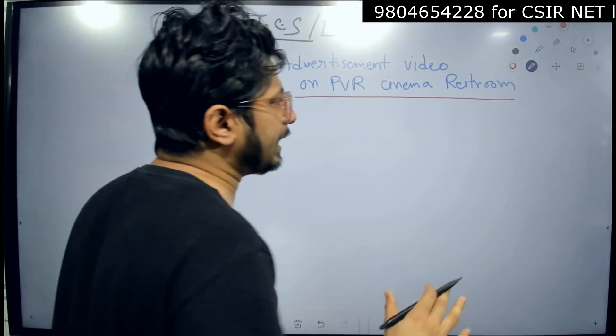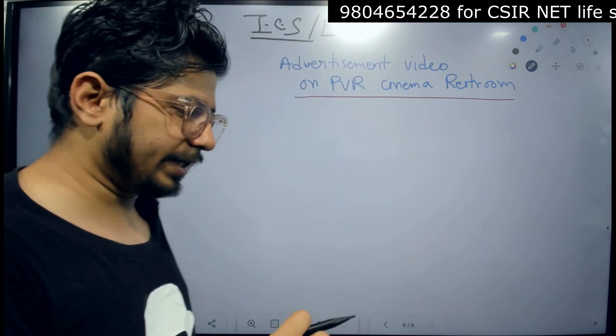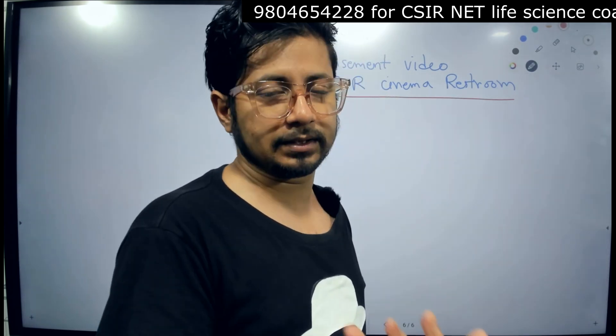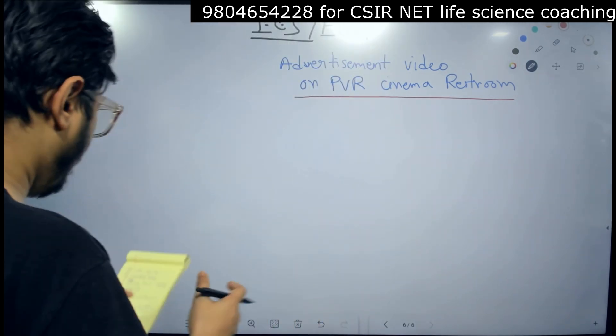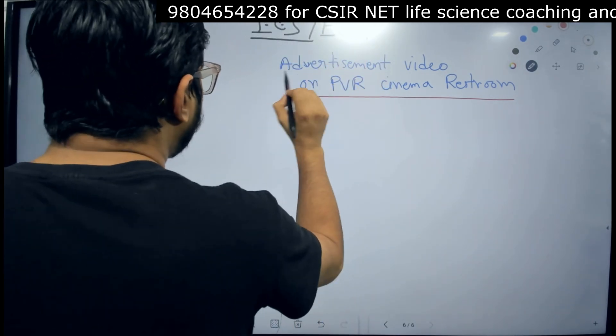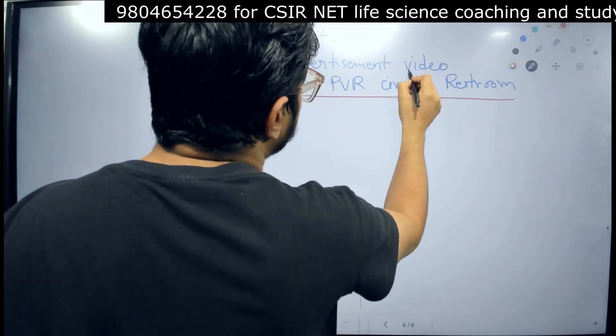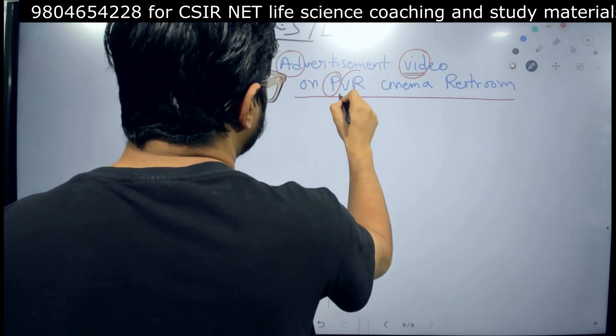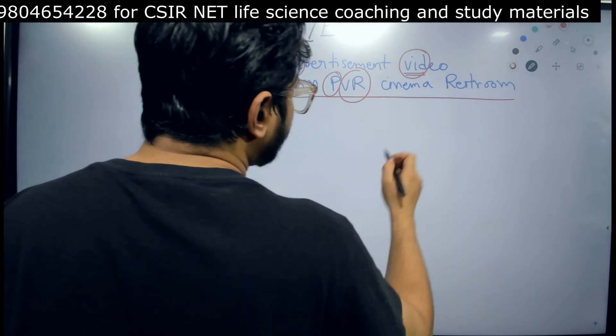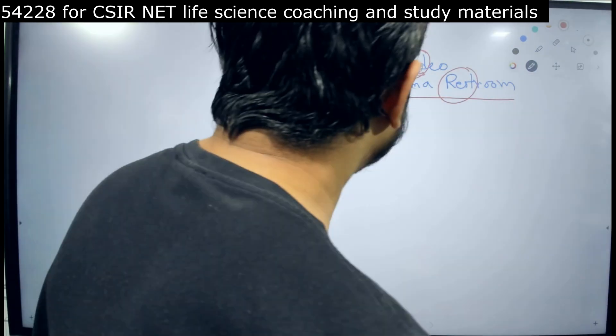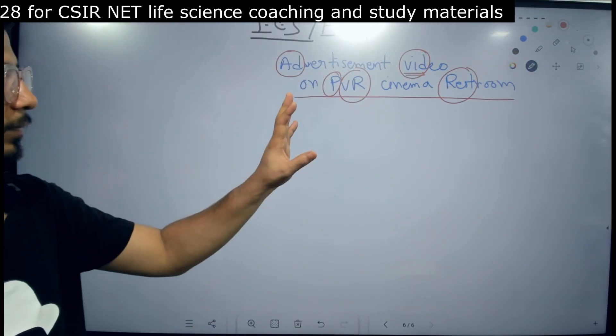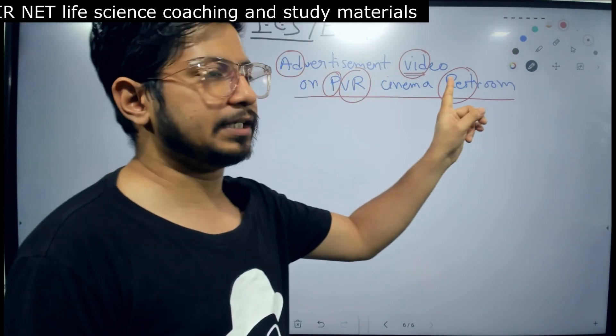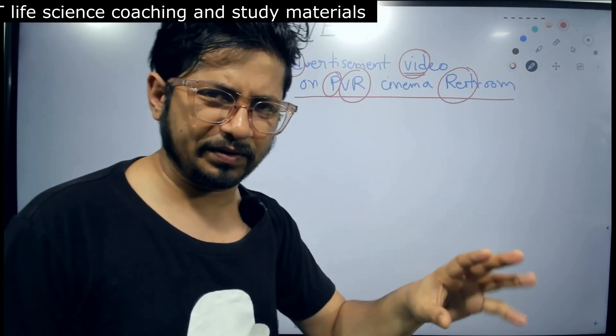I like building these weird mnemonics because this weird mnemonics will stay with you. The more weird it is, going to stay for a long time. So advertisement video on PVR cinema restroom - in the restroom of PVR cinema there is an advertisement video of something going on. If you remember this, you will understand the different stages of the intrinsic conduction system, different stages of hearts, different parts of the heart, the contraction and relaxation of it.